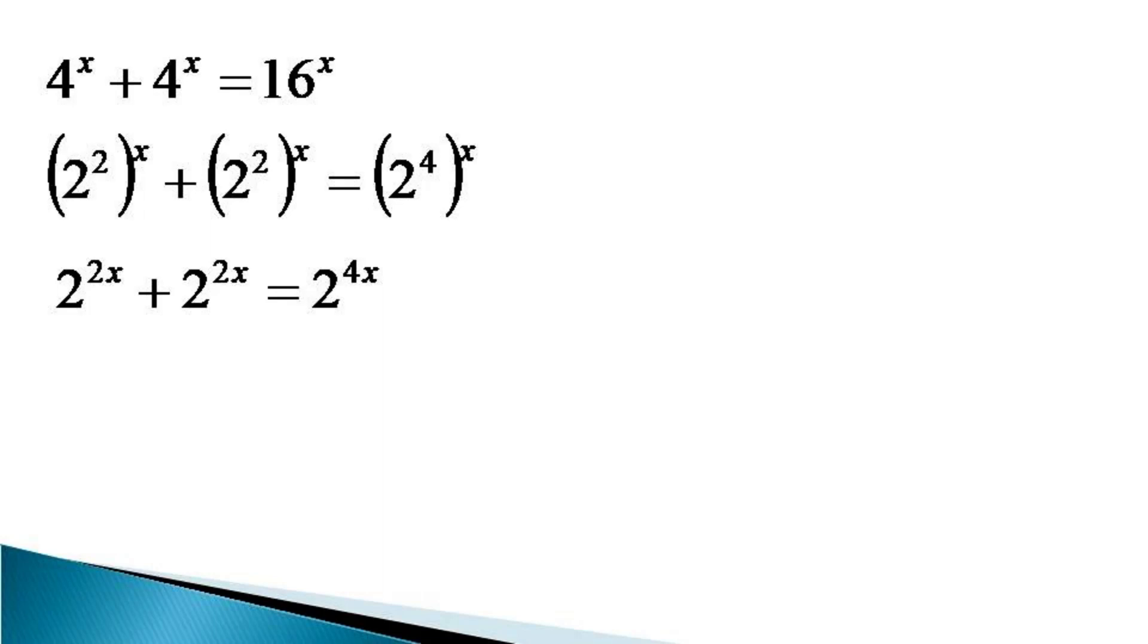This makes the left-hand side 2 × 2^(2x). Two multiplied by 2^(2x) becomes 2^(2x+1).